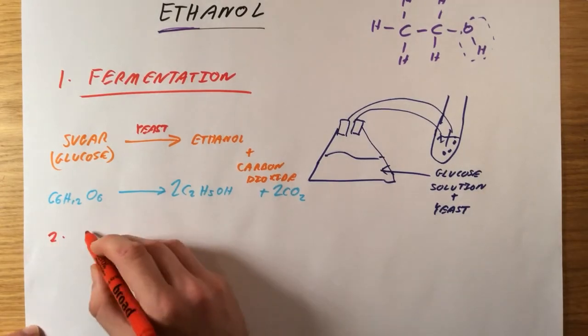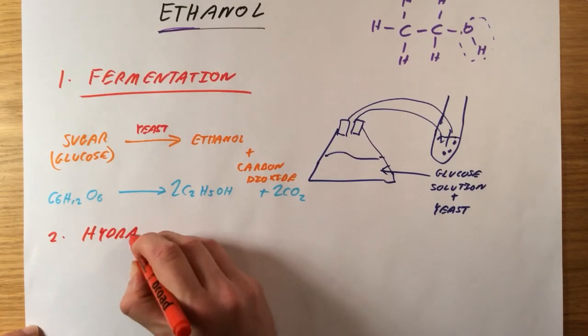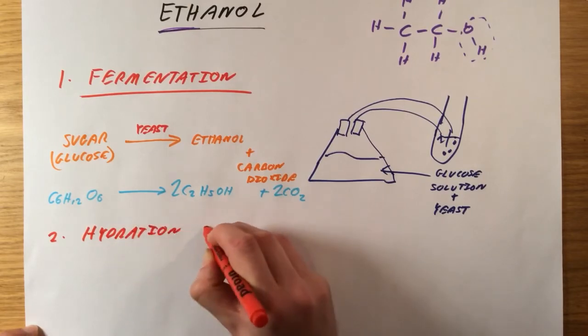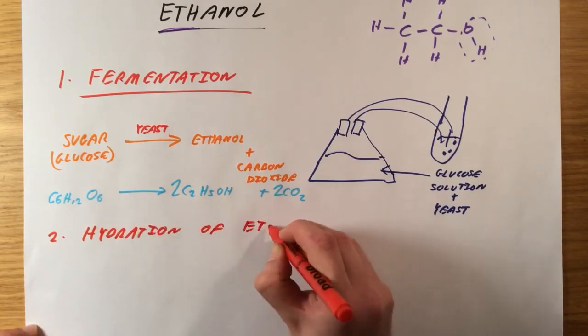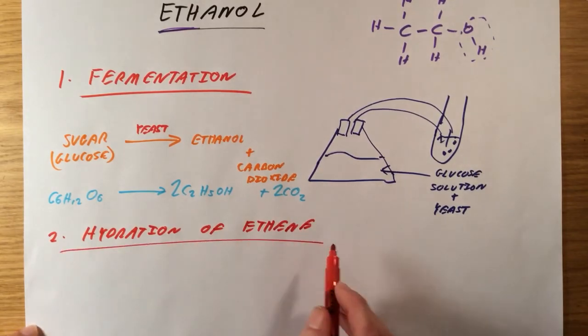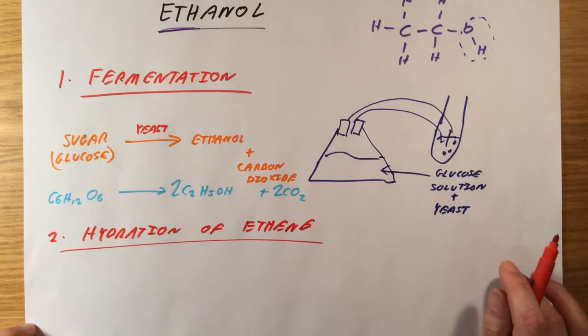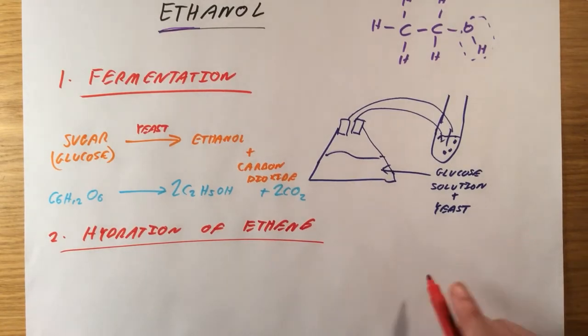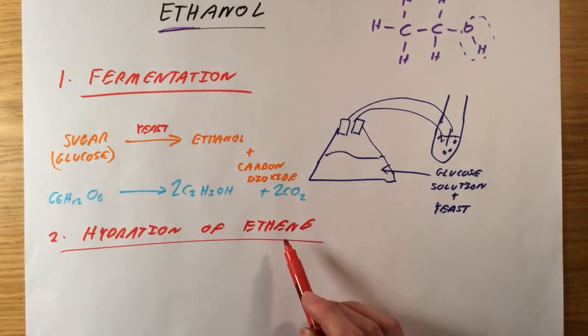The second method of production of ethanol is much, much, much faster, and this is by hydration of ethene. From the back, we produce ethene by cracking long chain hydrocarbons, and therefore ethene is non-renewable. Therefore, production of ethanol using this method is going to be a non-renewable process.